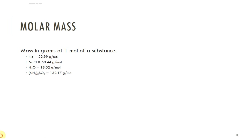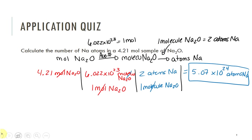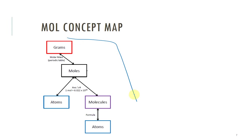If you need more practice with this, I have some conversions on Blackboard for you. You can also take the question I have here and change the number — 8.21, 7.52, any number you want for moles. You could change this compound. It may be carbon dioxide on the exam, or something else. Make sure you're comfortable going from moles to molecules, molecules to atoms, and so on. Use this mole concept map until you are really comfortable.